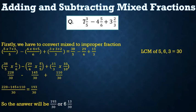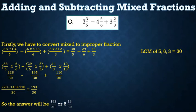Now let us learn the second method using the same question. First, convert each mixed fraction to an improper fraction: 7 3/5 = 38/5, 4 5/6 = 29/6, and 3 2/3 = 11/3. The LCM of 5, 6, and 3 is 30. So: (38×6)/30 - (29×5)/30 + (11×10)/30 = 228/30 - 145/30 + 110/30 = 193/30, which equals 6 13/30.